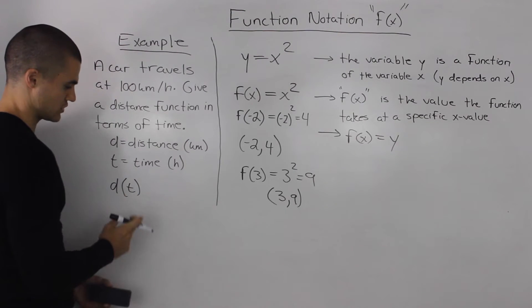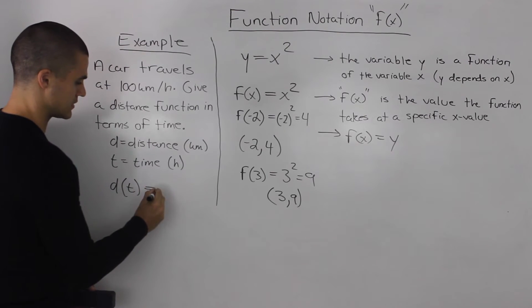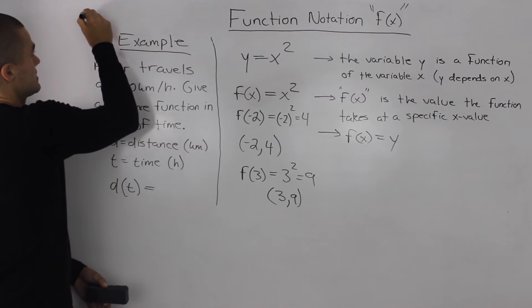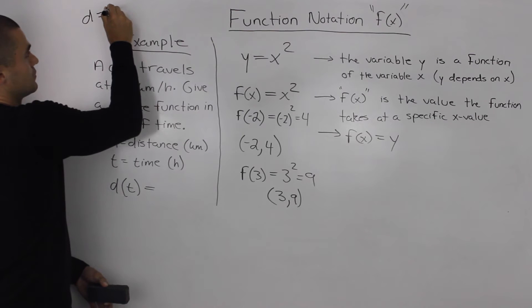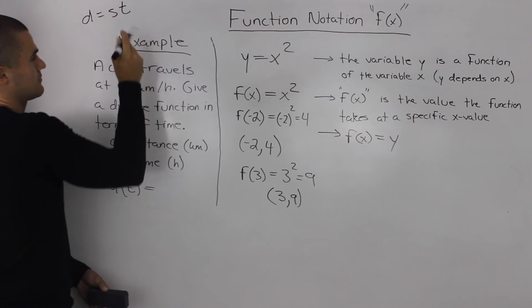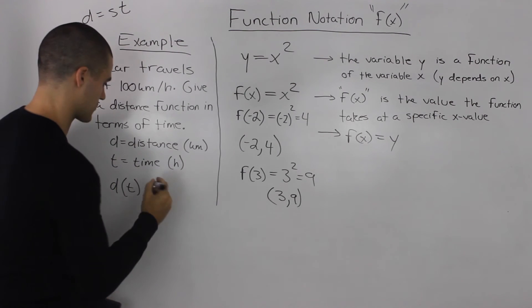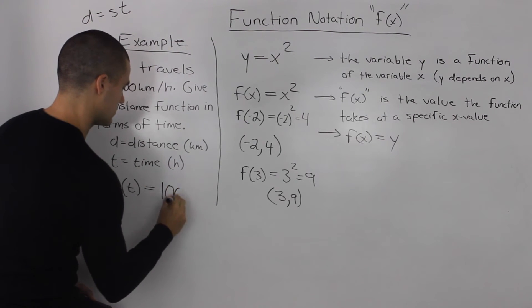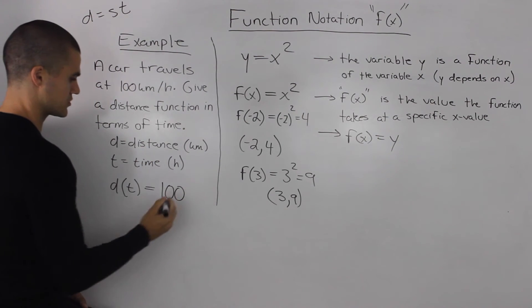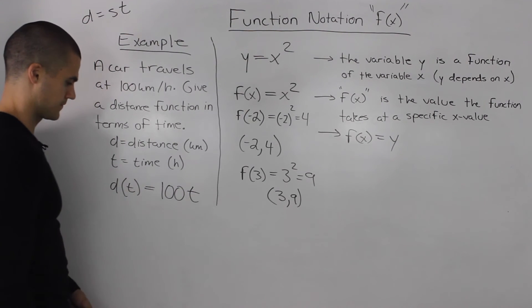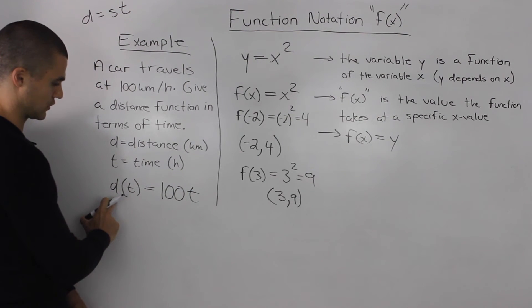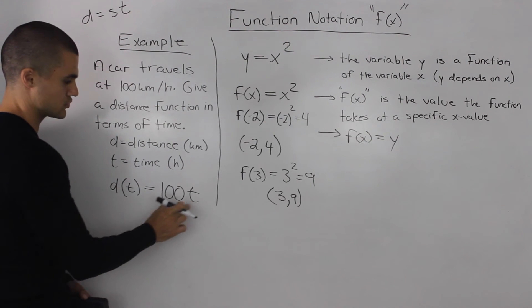The distance as a function of t is equal to what? Well we know that distance equals speed times time. And we know our speed is equal to 100 kilometers per hour. So we could put 100 here, and then time we just represent as t. So the distance of the car in terms of time or as a function of time is equal to 100t.